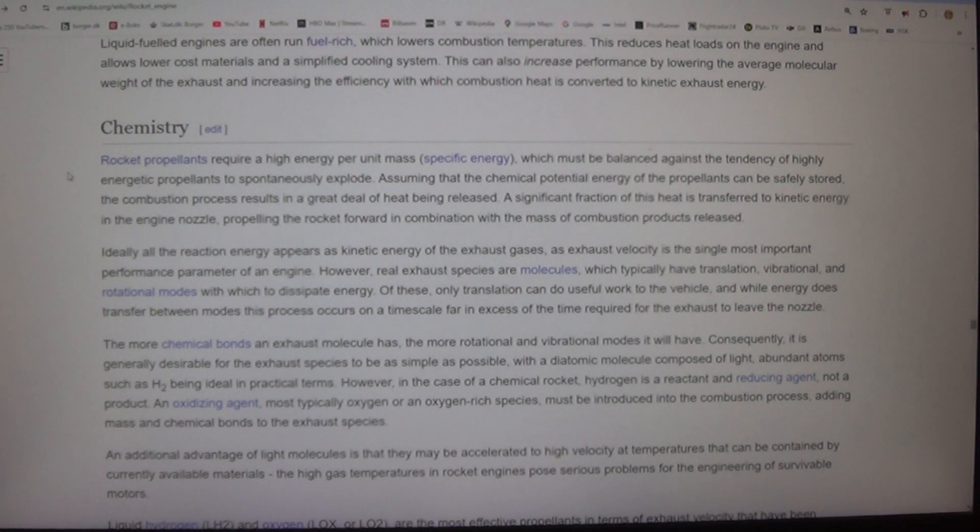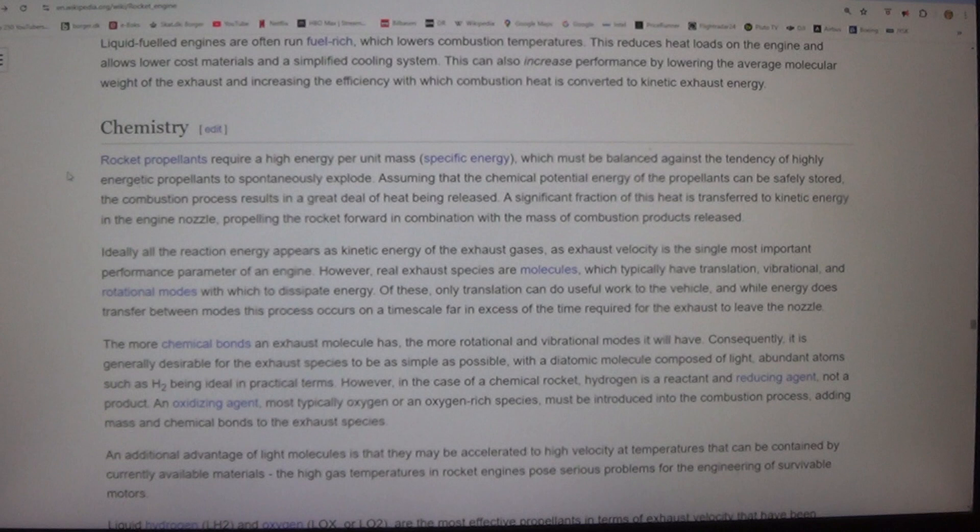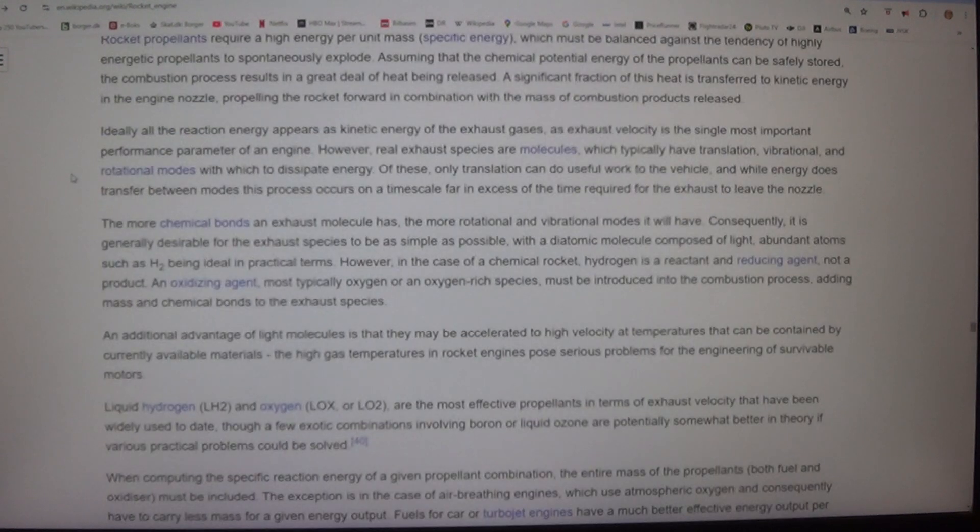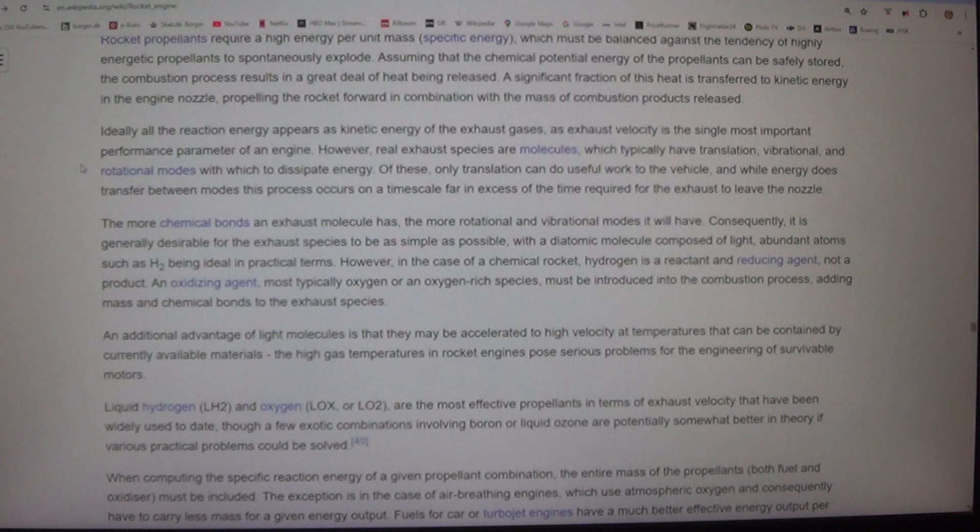Chemistry. Rocket propellants require a high energy per unit mass (specific energy), which must be balanced against the tendency of highly energetic propellants to spontaneously explode. Assuming that the chemical potential energy of the propellants can be safely stored, the combustion process results in a great deal of heat being released. A significant fraction of this heat is transferred to kinetic energy in the engine nozzle, propelling the rocket forward in combination with the mass of combustion products released. Ideally, all the reaction energy appears as kinetic energy of the exhaust gases, as exhaust velocity is the single most important performance parameter of an engine. However, real exhaust species are molecules which typically have translation, vibrational, and rotational modes with which to dissipate energy.